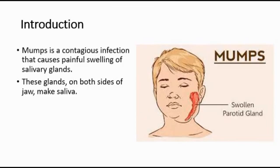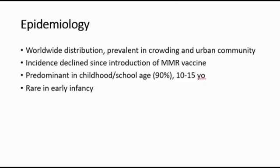For epidemiology, mumps is worldwide distributed. It is prevalent in crowded and urban communities, and since the introduction of the MMR vaccine, the incidence has declined. Mumps is predominant in childhood or school-aged children, mainly 10 to 15 years old.